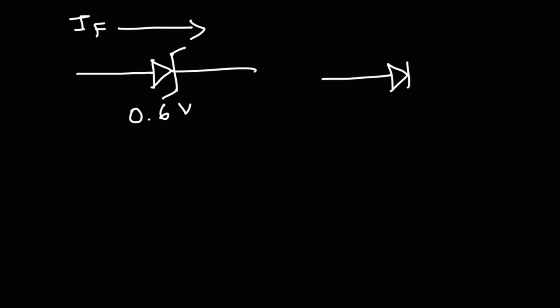For a Zener diode, the voltage drop is different when it's in reverse bias mode. The Zener diode is actually designed to operate in this region. And the voltage can vary. It's called the Zener voltage.